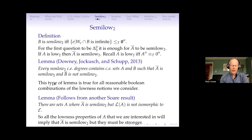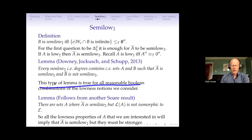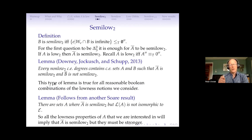It turns out that every non-low-2 set contains RE sets A and B — they can be scattered everywhere; every possibility occurs with these semi-low-2 sets or the complements of semi-low-2 sets. Unlike low and low 2, they're not degree-theoretic properties anymore — they're very much properties about the set itself. If you take a non-low-2 RE degree you could have any possibility of these lowness notions in there.